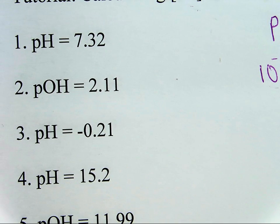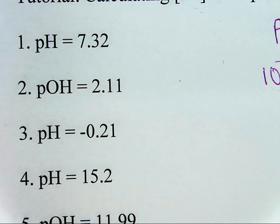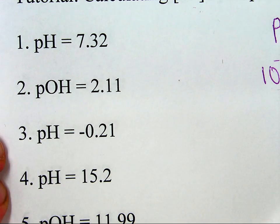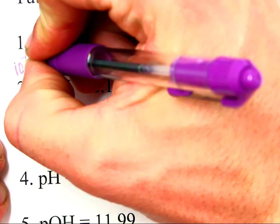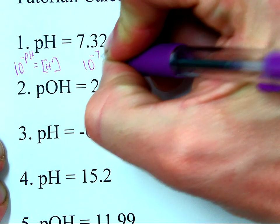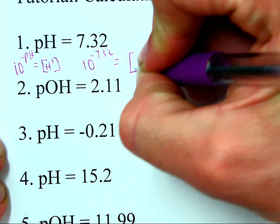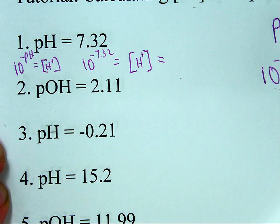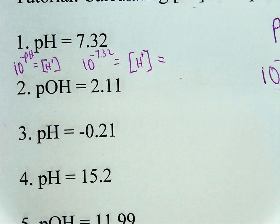So, pH of 7.32, how am I going to find the hydrogen ion concentration? Certainly, I'll want to begin with this 10 to the negative pH equals hydrogen ion concentration, which means 10 to the negative 7.32 is hydrogen ion concentration, which is equal to a number that I'll write off to the side. Now, in order to do that on the calculator, there's a few things that need to be considered with that.